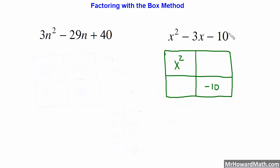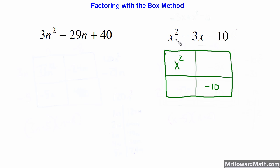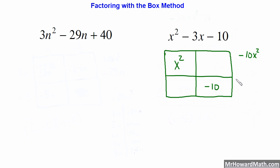We need to make sure the trinomial is in standard form in order for these steps to work correctly. For example, if it was written as negative 3X plus X squared minus 10, you would want to rearrange it so that it's in the correct form. Now we've written the squared term in the upper left box and the constant term in the lower right box. The next step is to take the product of those two terms, so negative 10 times X squared gives us negative 10X squared. Then we write down our middle term, negative 3X.